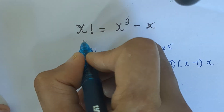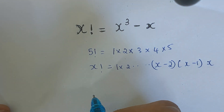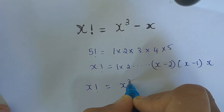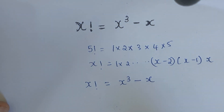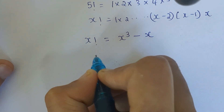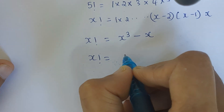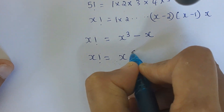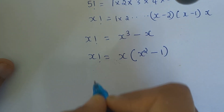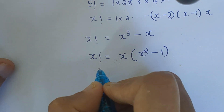So our question is x factorial equals x cubed minus x. Let us rewrite the question. We can factor the right-hand side: x is common here, so we can take x outside, giving x factorial equals x × (x² - 1). So we can divide both sides by x.